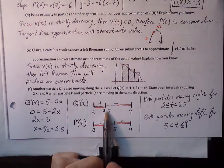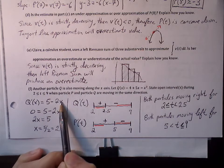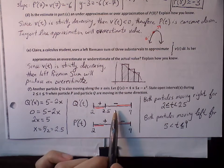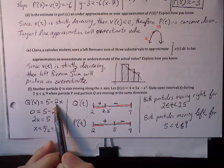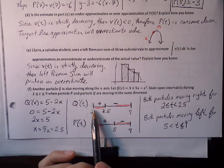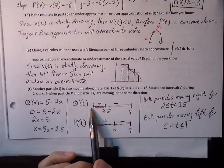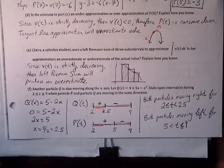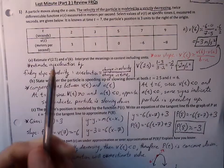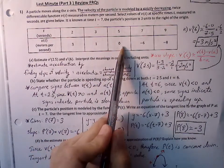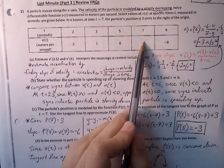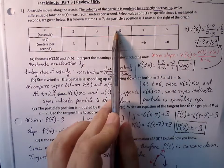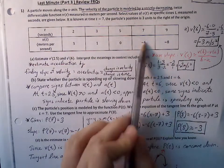Testing values: plugging in 2.1 gives a value less than 5, so velocity is positive. Plugging in 3 gives 5 minus 6 equals negative 1, so velocity is negative. So particle q moves right from 2 to 2.5, stops, turns around, and moves left from 2.5 to 9. For particle p, velocity is positive and decreasing until it hits 0 at t equals 5, then goes negative. So p moves right until t equals 5, then left from 5 onward. The critical point for p is at t equals 5.